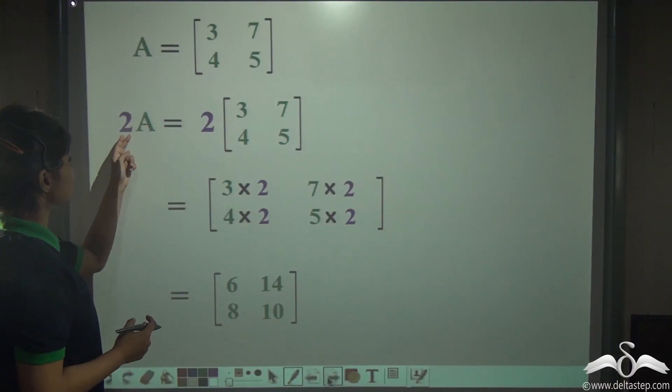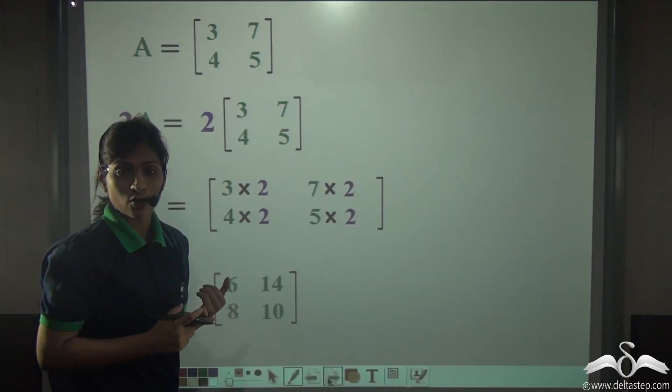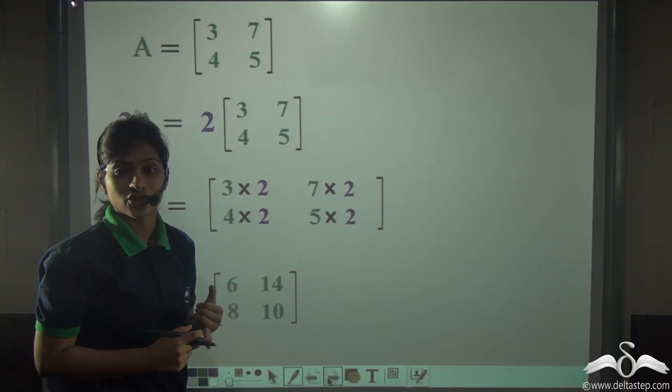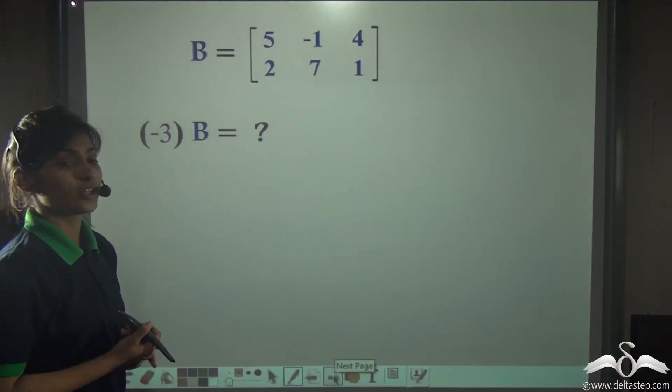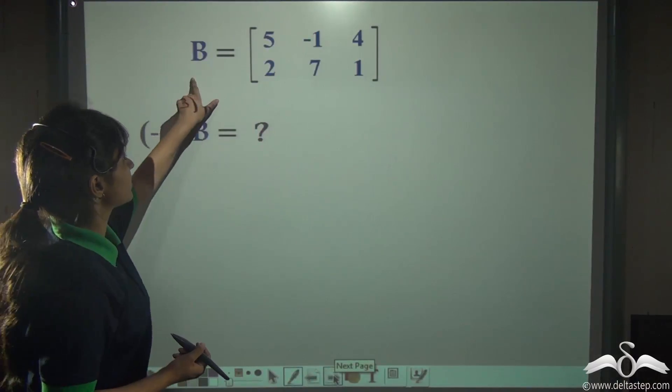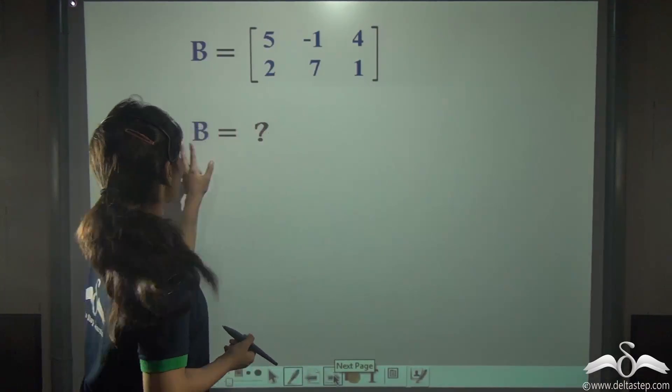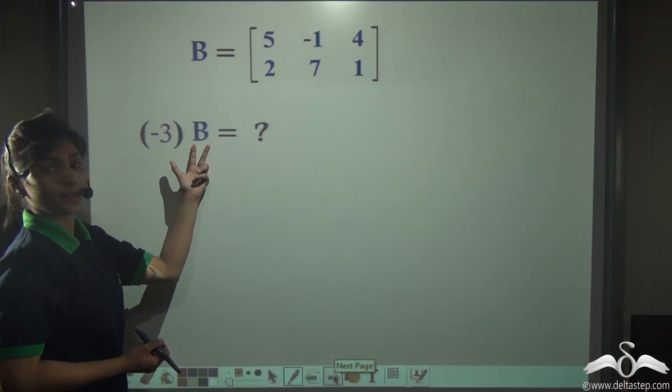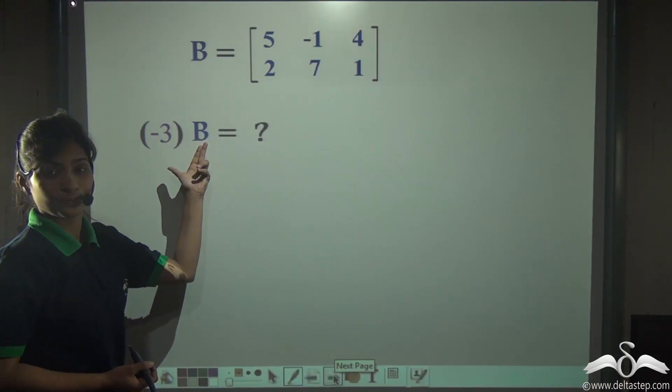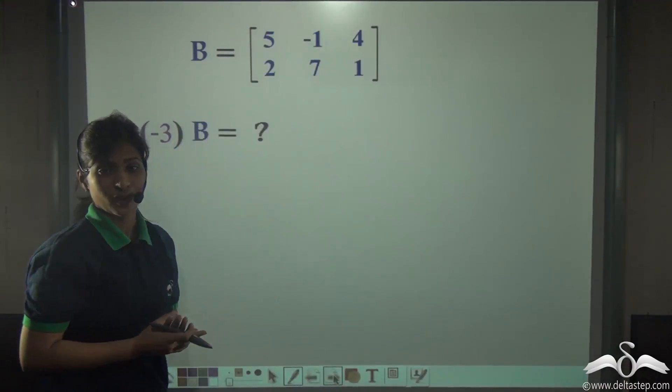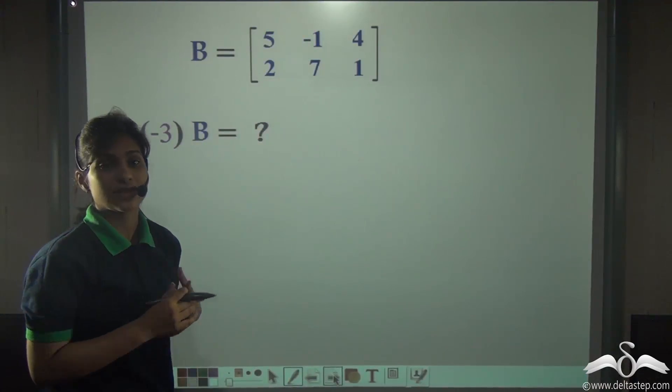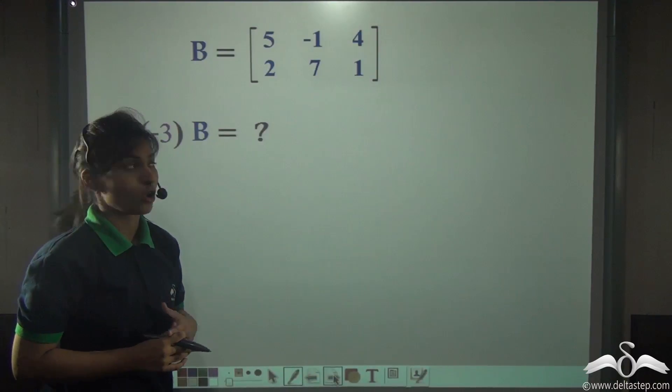Now, this number can also be 0, can also be a negative integer as well. Let us solve such a sum where this number is a negative integer. This is a matrix B and you have to find out minus 3B, that is minus 3 into B. What is the order of this matrix? This is not a square matrix like A, same number of rows and columns? No.